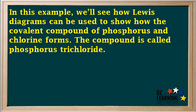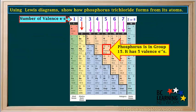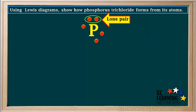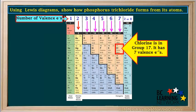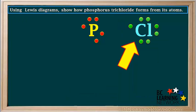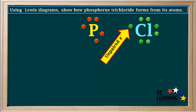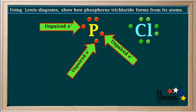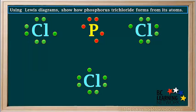In this example, we'll see how Lewis diagrams can be used to show how the covalent compound of phosphorus and chlorine forms. The compound is called phosphorus trichloride. You will soon see why this name is used. If we locate phosphorus on the periodic table, we see that it's in group 15, so it has five valence electrons. We'll draw its Lewis diagram here. It has one lone pair and three unpaired electrons. Locating chlorine on the periodic table, we find it's in group 17, so it has seven valence electrons. So we'll add a chlorine atom with seven valence electrons shown in green. Notice the chlorine atom has three lone pairs and one unpaired electron. Because a phosphorus atom has three unpaired electrons, it will need to bond with three chlorine atoms. So we can start with one phosphorus atom and three chlorine atoms like this.